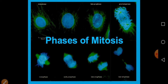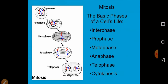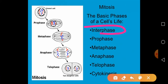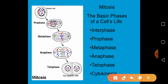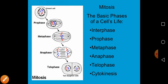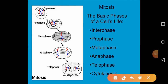Mitosis is broadly divided into two phases: number one is the interphase, and number two is the mitotic phase, also called the M phase. The M phase is further divided into prophase, metaphase, anaphase, telophase, and cytokinesis. The interphase is subdivided into the G1, S, and G2 phases.